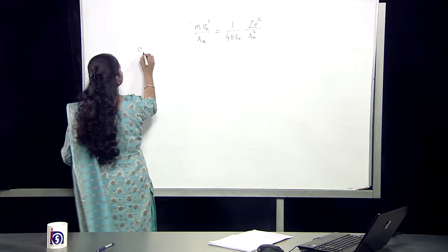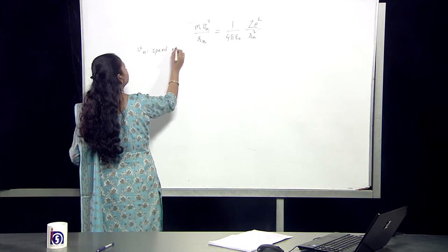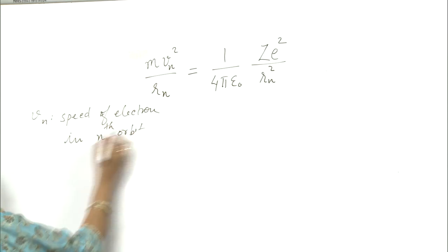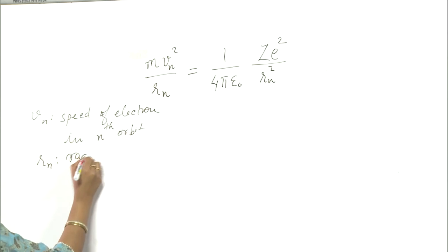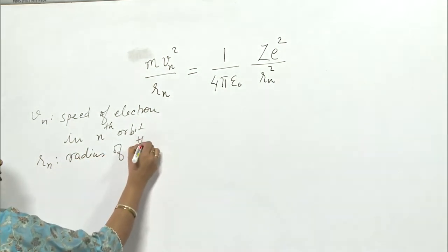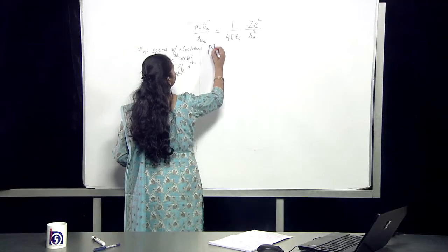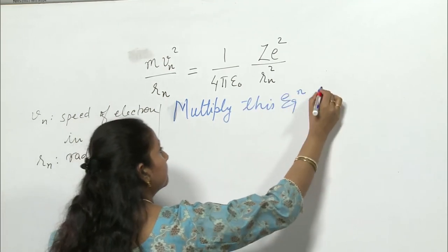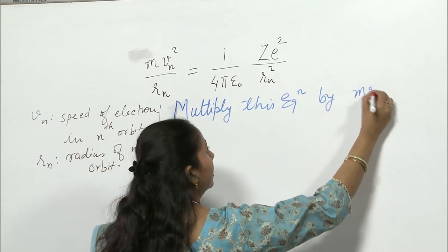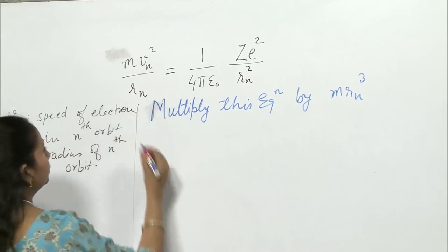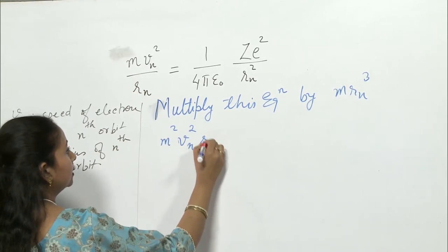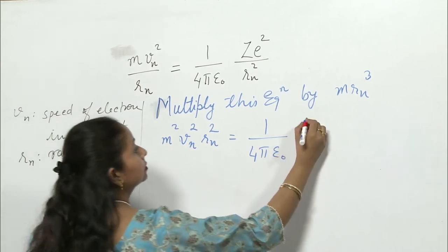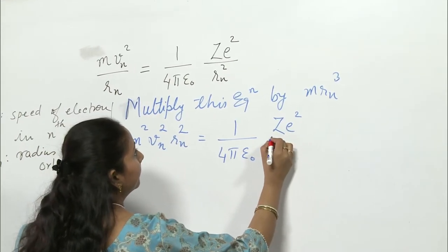Here, vn is the speed of electron in the n-th orbit, and rn is the radius of the n-th orbit. Now, multiplying this equation by mv² / (m × rn³), we will get m²vn²rn² equal to (1 / 4πε₀) × ze²rn.